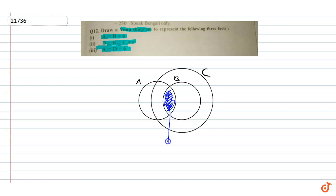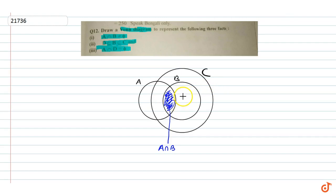This is A intersection B. Now, A intersection D is equal to empty set. This means A and D are disjoint sets, so we have no intersecting value between them. This is our set D.